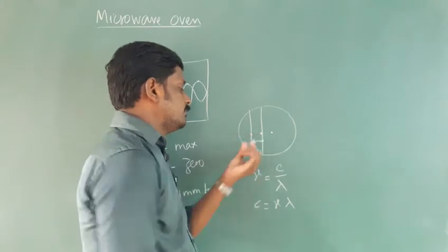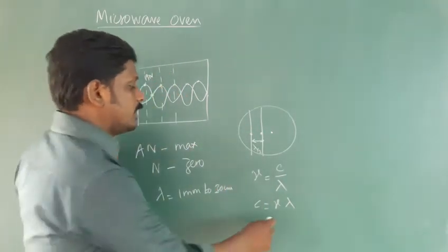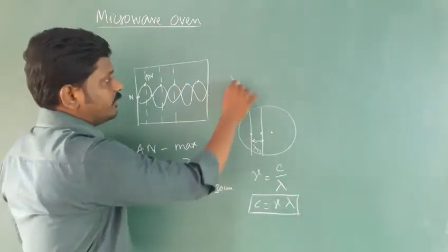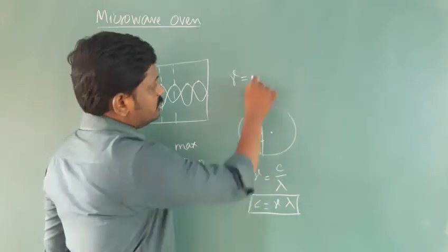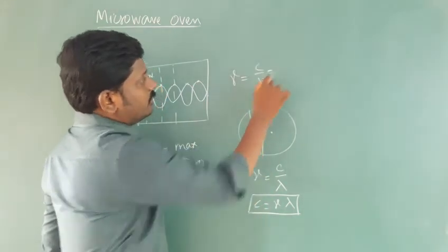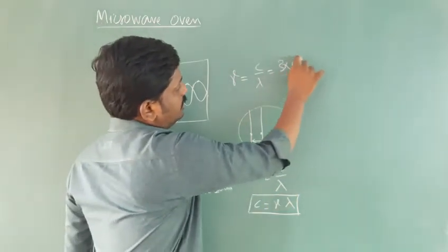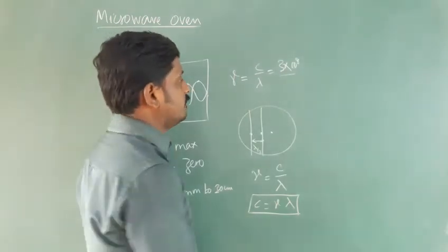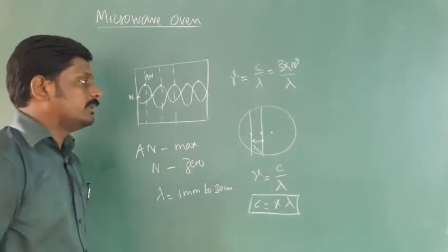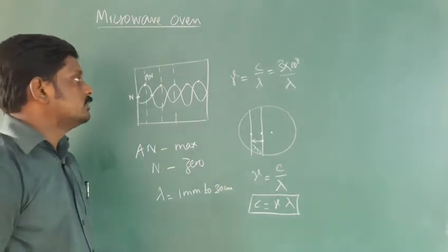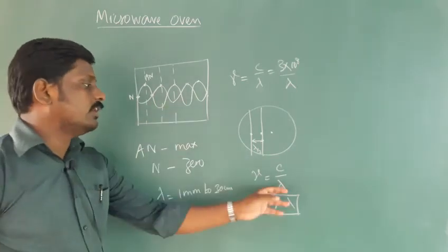You can measure the length between the two spots — that is the distance between the two antinodes — and also we can find the frequency. The frequency of the microwave oven can be found using μ = C/λ. We know microwaves are electromagnetic waves, so they travel at a speed of 3 × 10⁸ meters per second. The wavelength ranges from 1 millimeter to 30 millimeter. From this microwave oven, we can find both the frequency and the wavelength it produces.